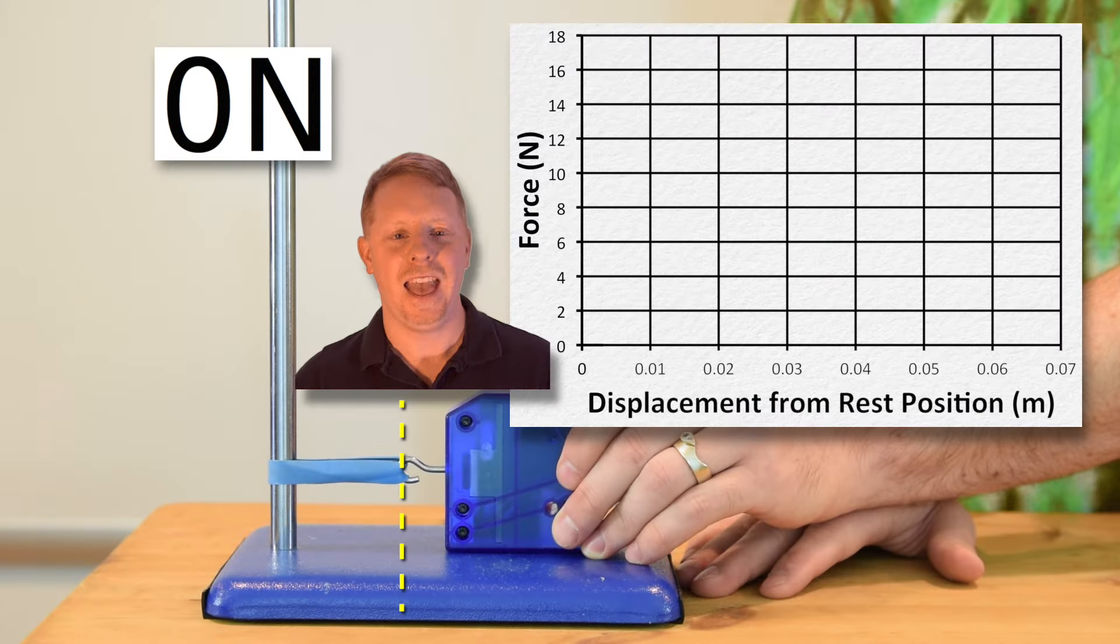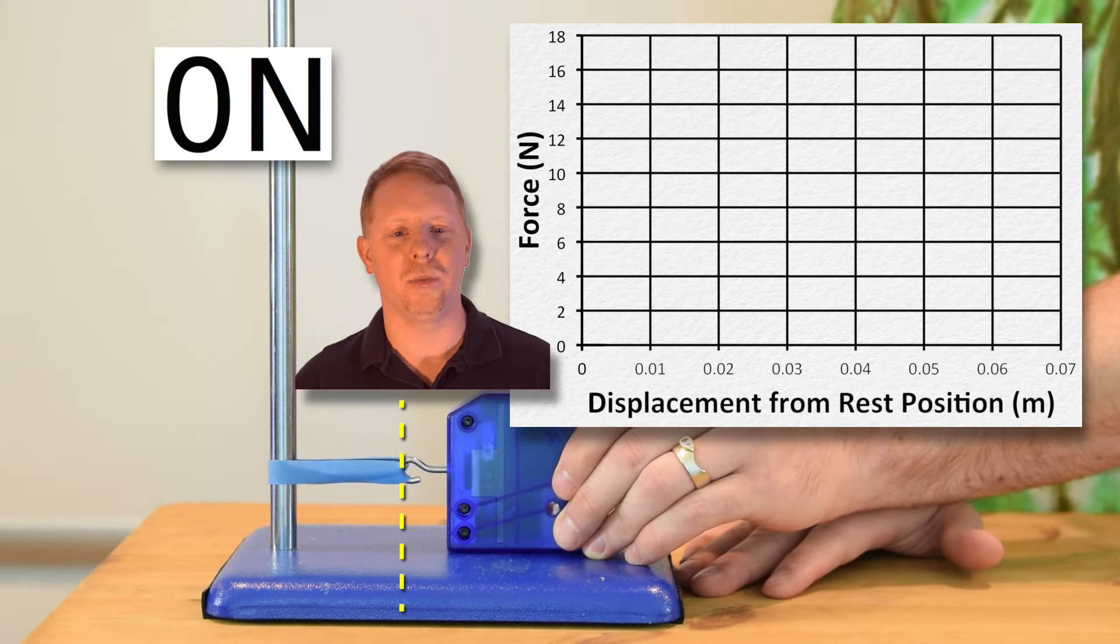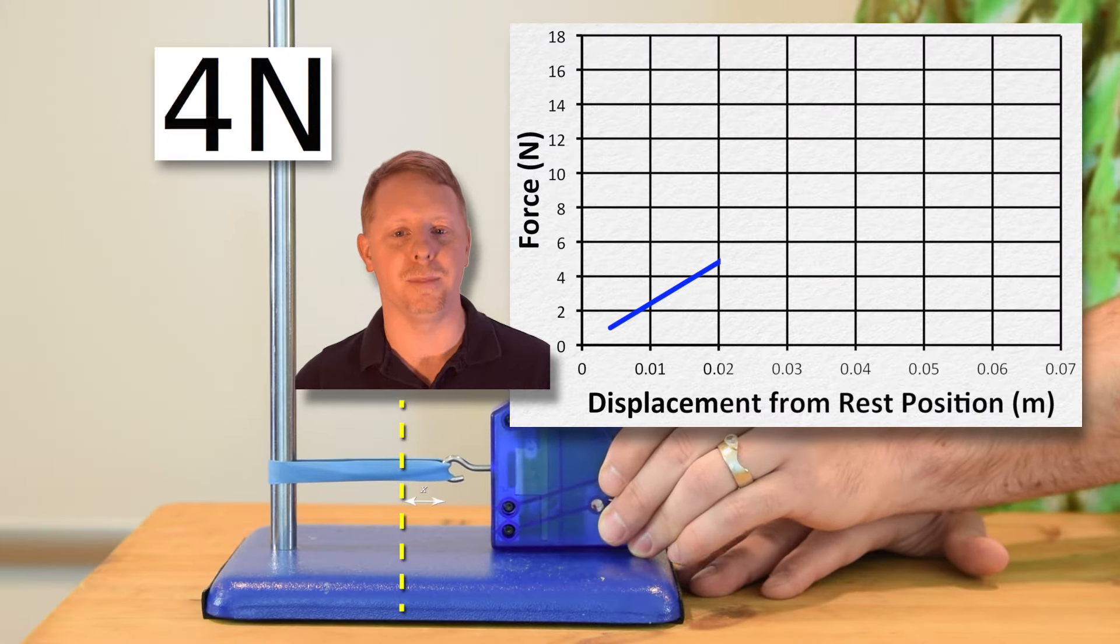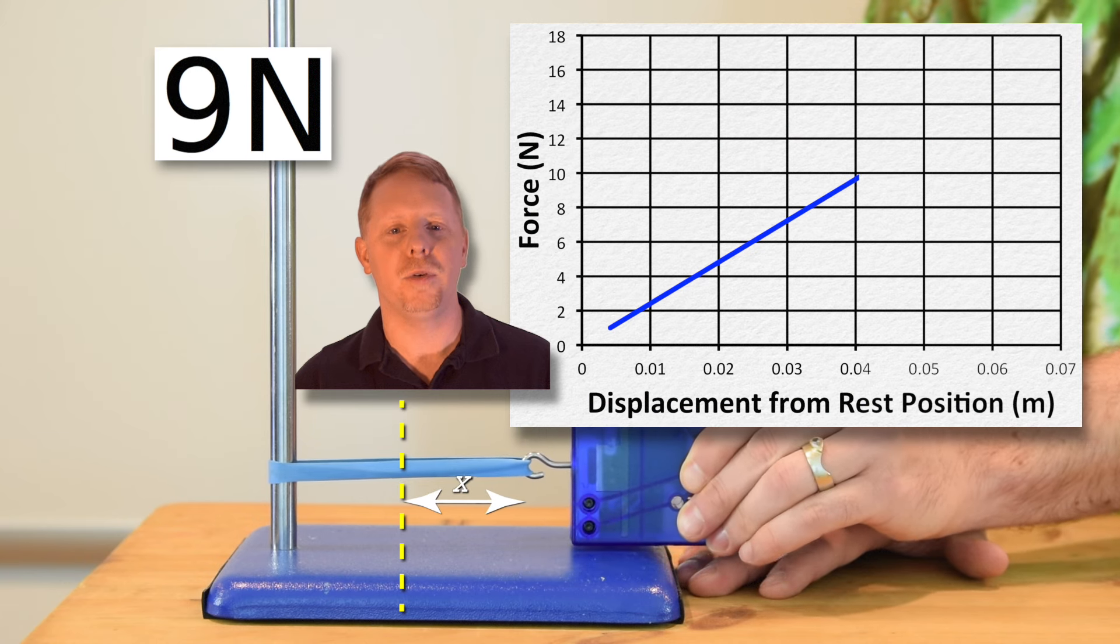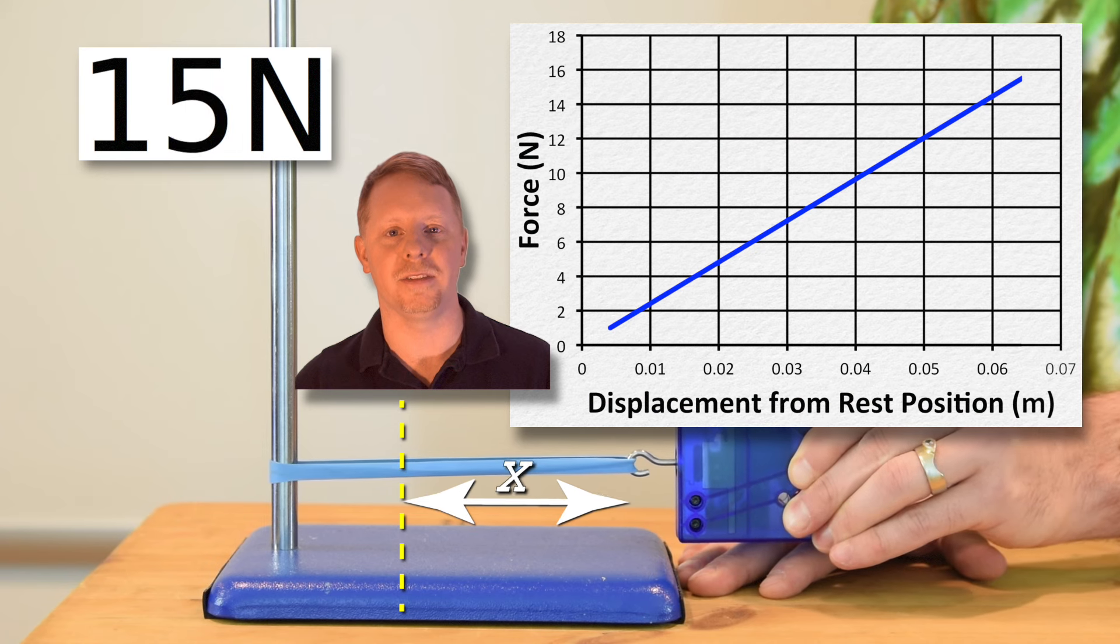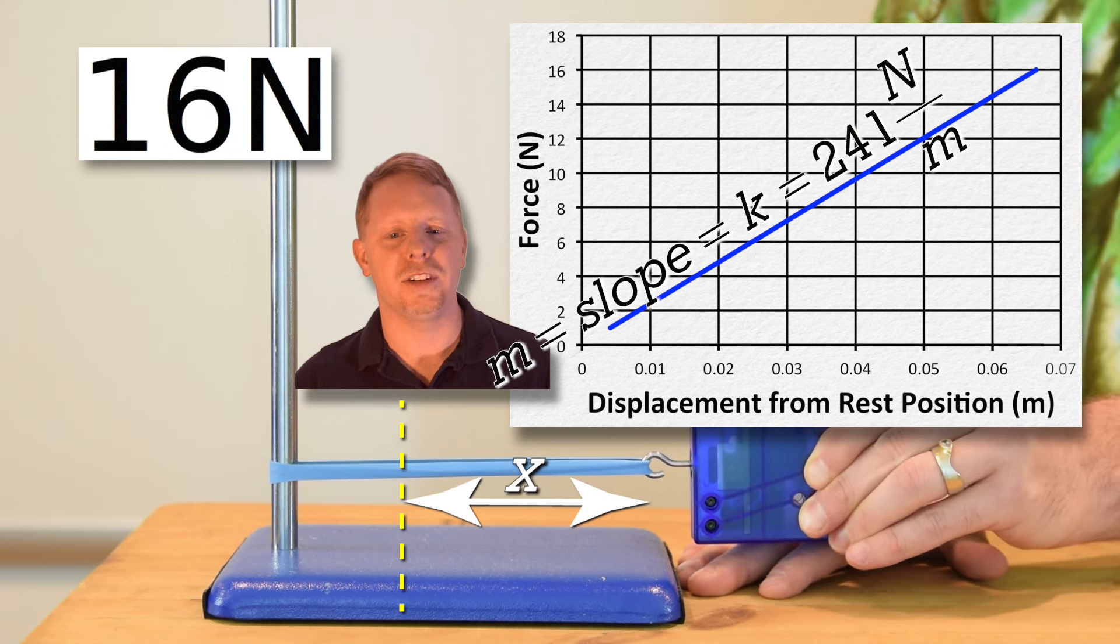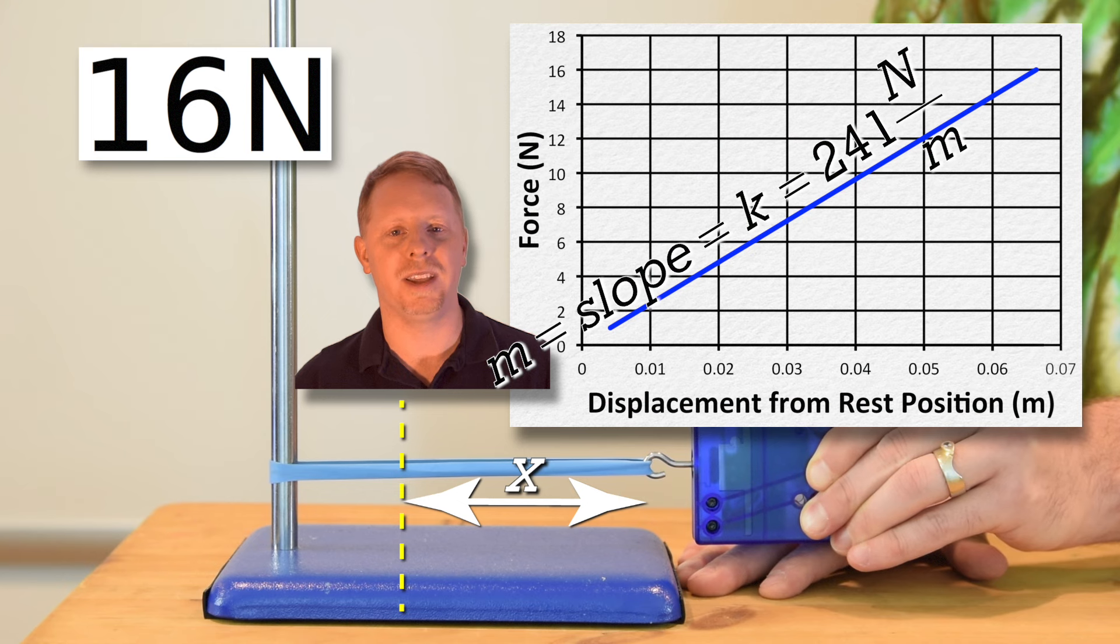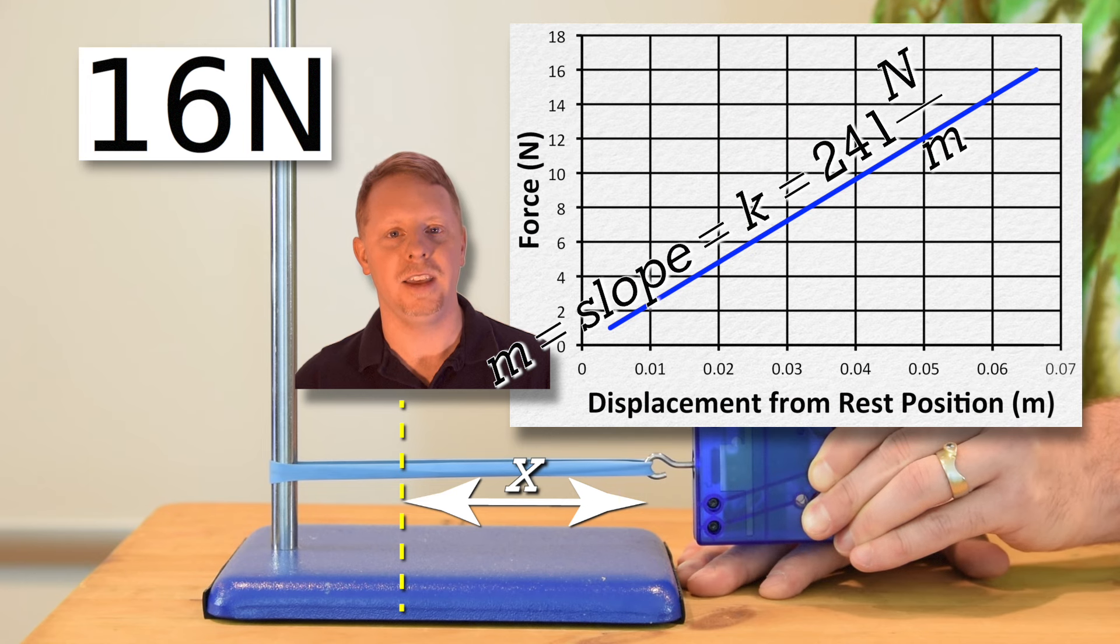Who is that? That is Mr. Fullerton of AplusPhysics.com. You were in one of his videos. As Mr. P pulls the rubber band to the right, the displacement from equilibrium position, or X, increases, and the force caused by the spring increases linearly, which you can see in the graph. The slope of the line which describes this data is the spring constant of the rubber band. For this rubber band, the slope of the line, and therefore the spring constant, is 241 newtons per meter.